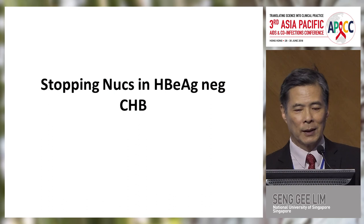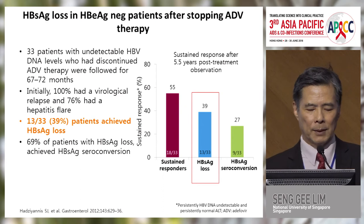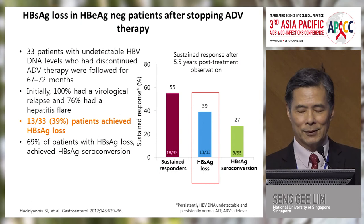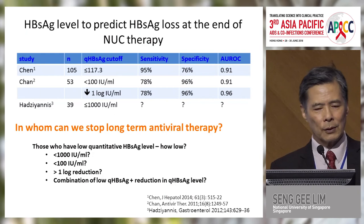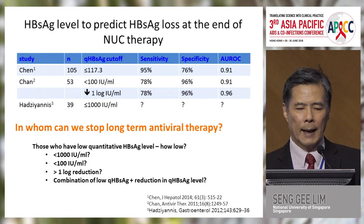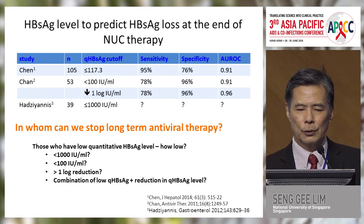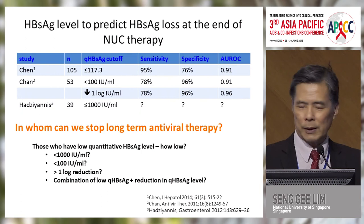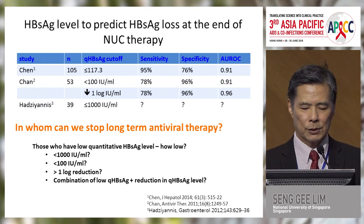Stopping nucleoside analogs is an interesting strategy. In a study by Professor Hadziyannis done about five years ago, in a group of patients who stopped adefovir, 39% achieved s-antigen loss — an amazingly high result — and these patients had low s-antigen levels. Several studies have explored this further: one by Henry Chan and another by Professor Chen from Taiwan. The rates of s-antigen loss varied between the two groups, but the sensitivity and specificity data based on quantitative s-antigen levels indicate that low quantitative s-antigen levels are associated with achieving s-antigen loss. We don't yet know the optimal threshold — whether it's below 1,000, below 100, or a more-than-one-log reduction — and further studies are required.